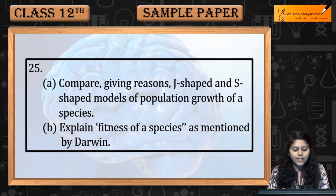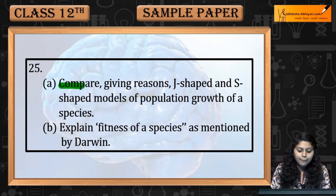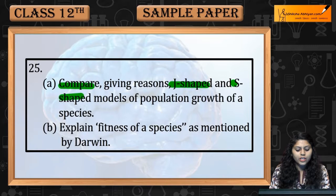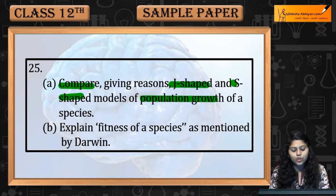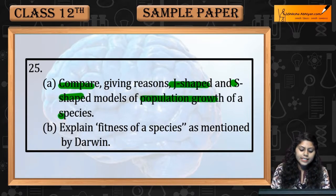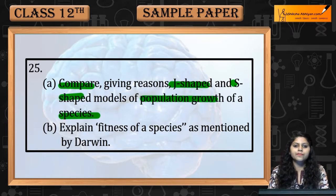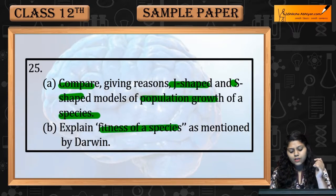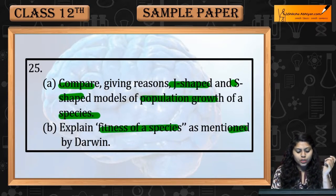Question number 25: Compare, giving reasons, J-shape and S-shape models of population growth of a species. Explain fitness of a species as mentioned by Darwin.